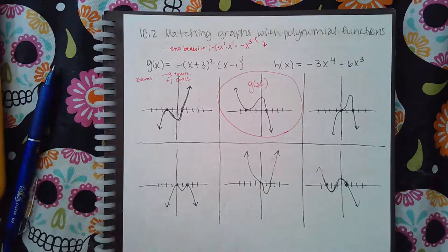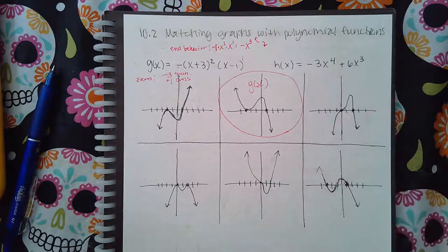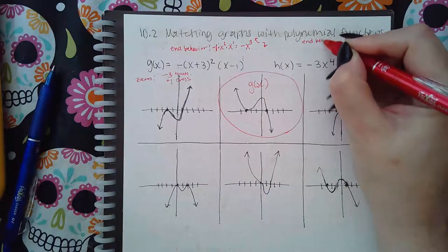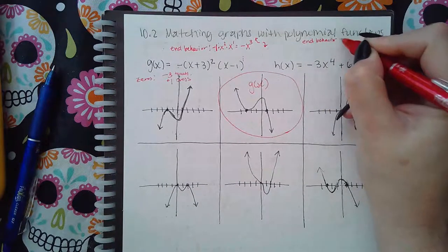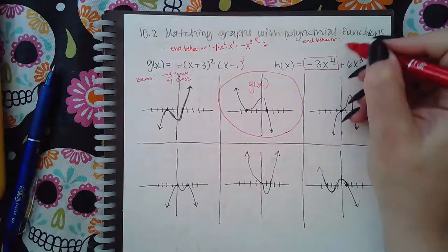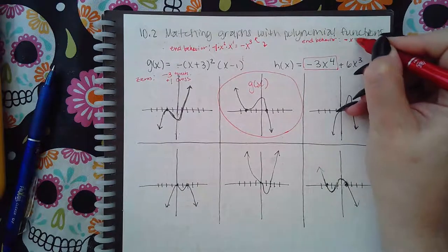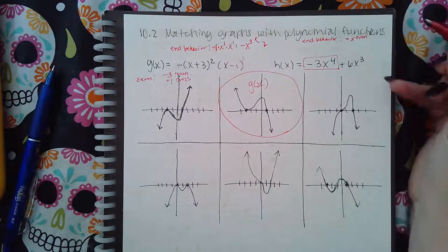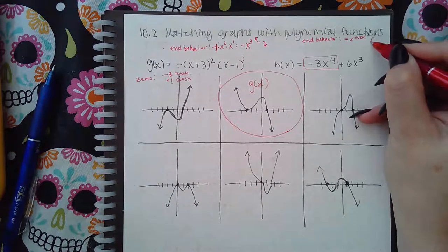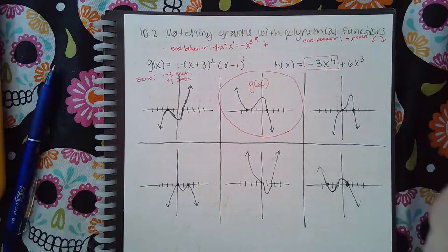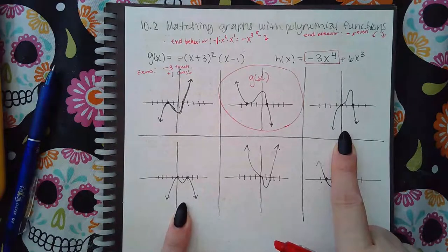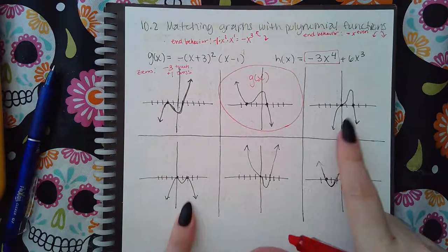Now, what we're going to do is we're going to look at this one. Now end behavior is actually going to be easy for this one because it's already in expanded form, so all I have to do is pick the guy with the highest exponent. And obviously it's a negative coefficient with an even exponent. And what kind of behavior does a negative even have? A negative even has double downward behavior. So between all the graphs, these two are the only ones that are going down on both ends. So it has to be between these two.